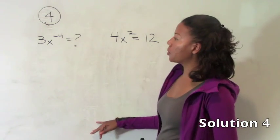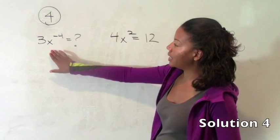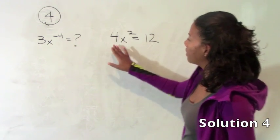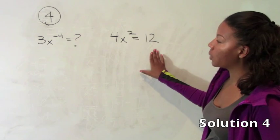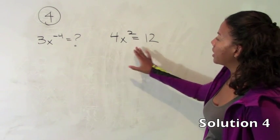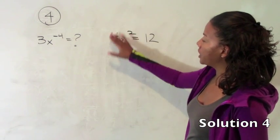Number 4. Number 4 asks us for the value of 3x to the negative 4th given that 4x squared equals 12. So here is our complete equation over here.